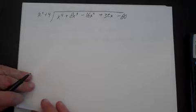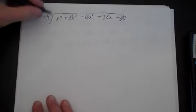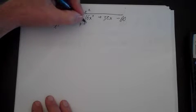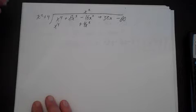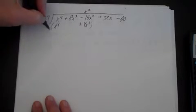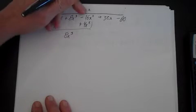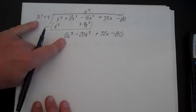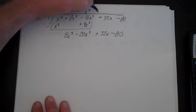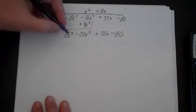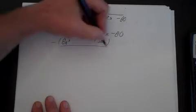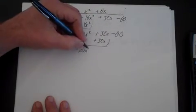Let's divide. x² goes into x⁴, x² times. Multiplying gives x⁴ + 4x². I have to put the 4x² underneath the x² term. Subtracting gives 0 for x⁴, and then -16 minus -4 gives -20x², so we have 8x³ - 20x² + 32x - 80. Now, x² times 8x equals 8x³, giving 8x³ + 32x. Subtracting, I get 0 and 0, and I bring down -20x² - 80.